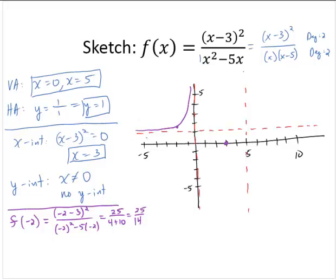The question comes up, does it actually cross that horizontal asymptote? And there's a way to figure out if it crosses the horizontal asymptote. We know the horizontal asymptote occurs at y equals 1, so set the function equal to 1. So let's see what happens there.